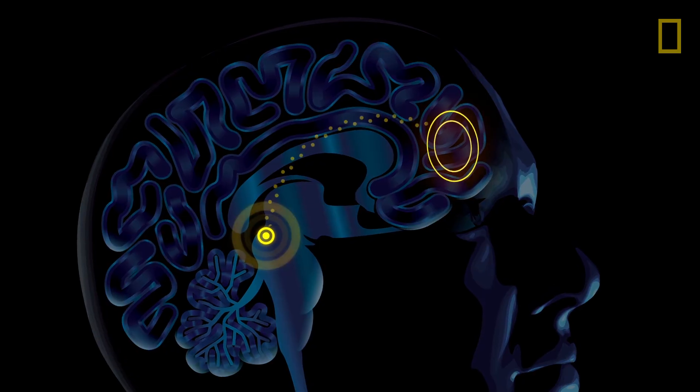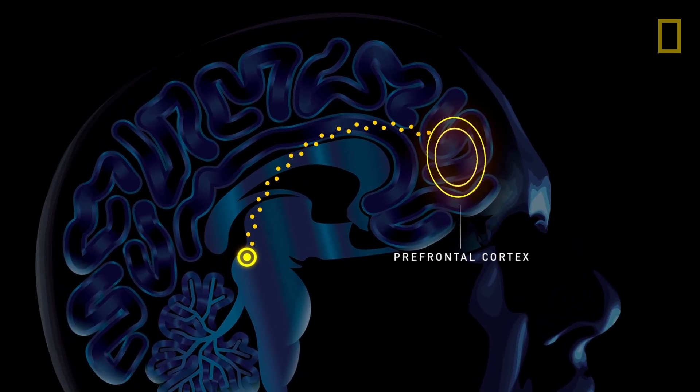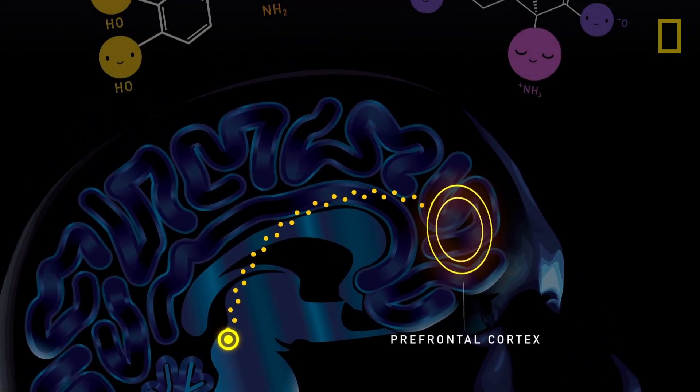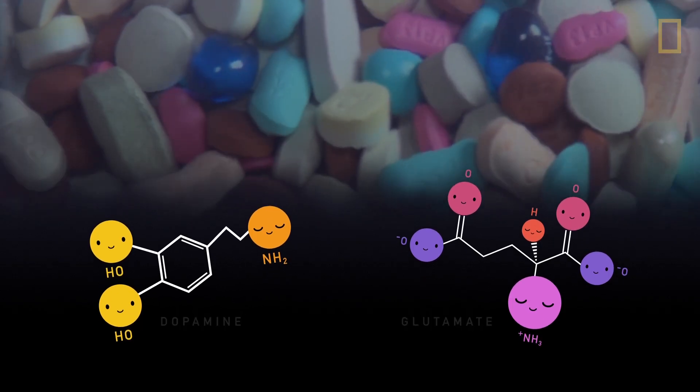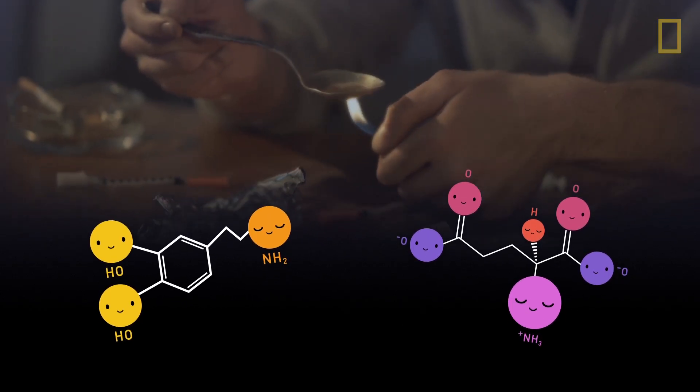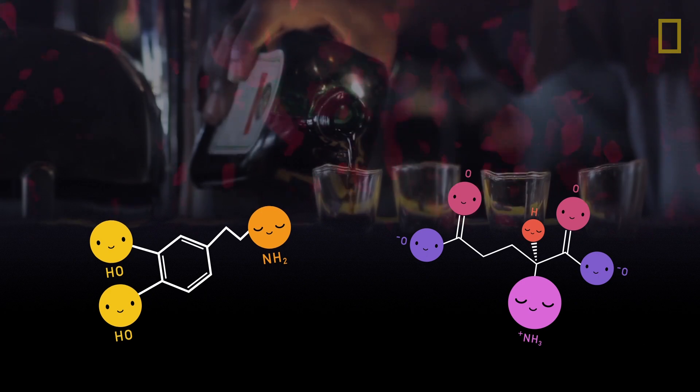Dopamine also goes to the prefrontal cortex, where with the help of an amino acid called glutamate, rich visualizations that cue cravings are conjured. Think images of drug paraphernalia, sex, or a bottle of booze.